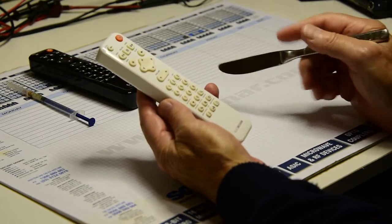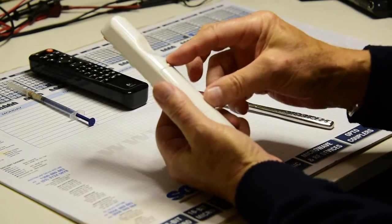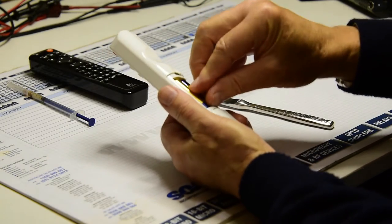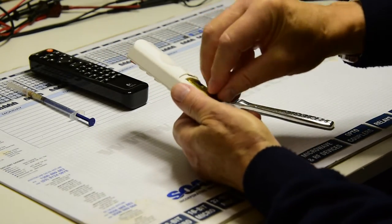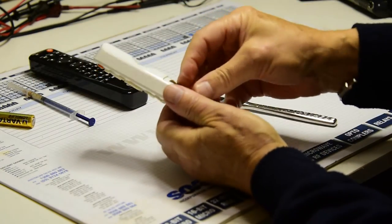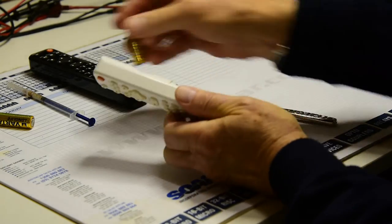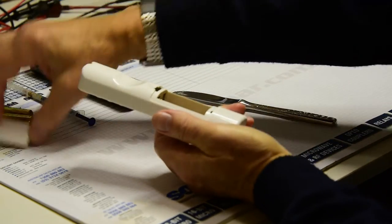So to get the remote apart, the first thing to do is remove the batteries, leave the cover off.